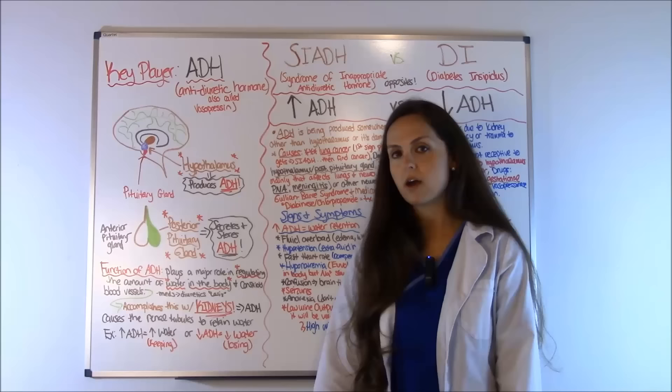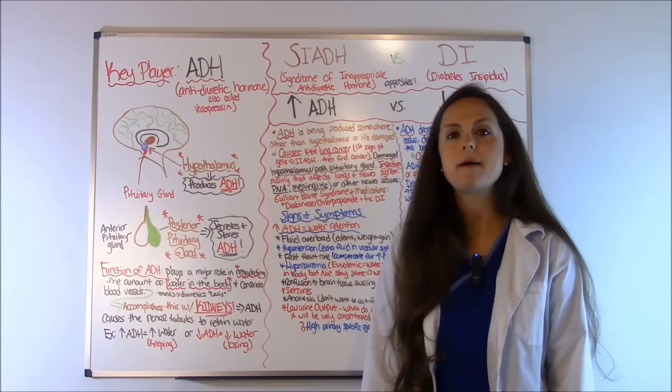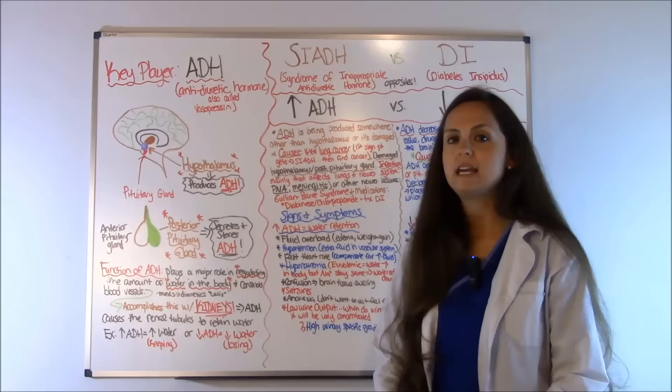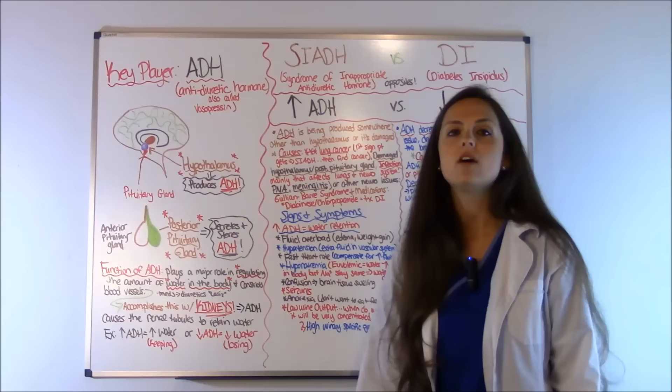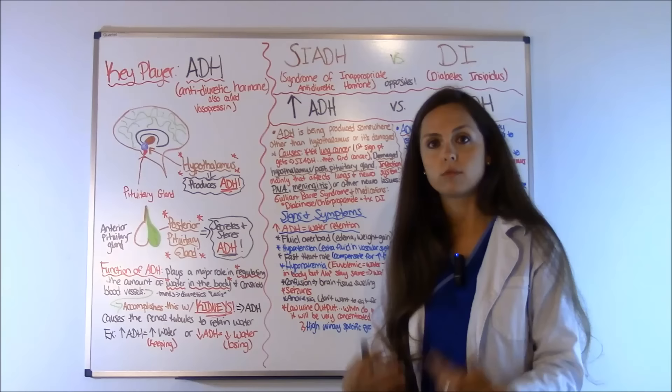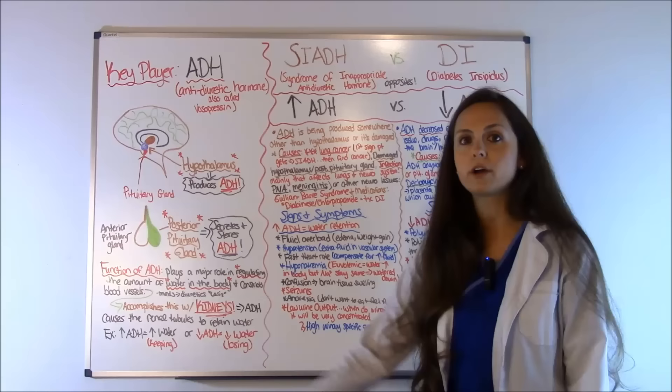So if you have a lot of anti-diuretic hormone in the body, it's going to cause those renal tubules to keep water — you're going to have increased water in the body because it's not getting rid of it. But if you don't have a lot of ADH in the body, it's going to cause the kidneys to get rid of the water, and you're going to be losing too much. Let's look at the brain, because areas of the brain are responsible for regulating your anti-diuretic hormone.